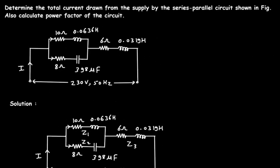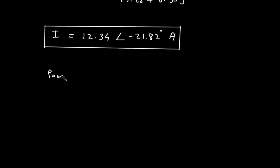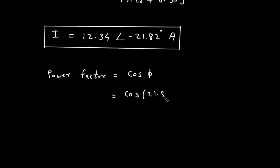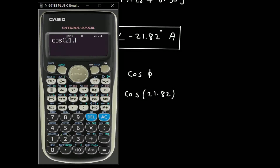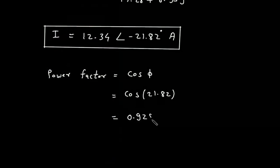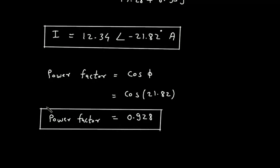Next, we calculate the power factor of the circuit. Power factor = cos φ. The angle φ is −21.82°, and the negative sign means it is lagging. So power factor = cos(21.82°) = 0.928 lagging.